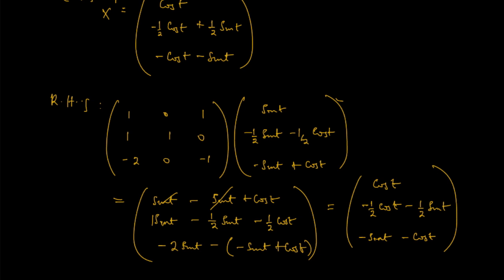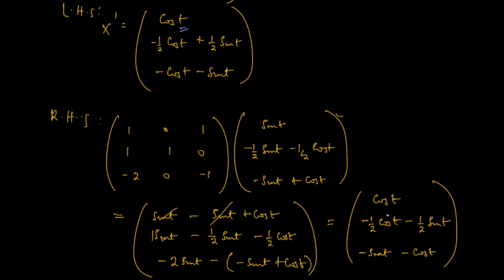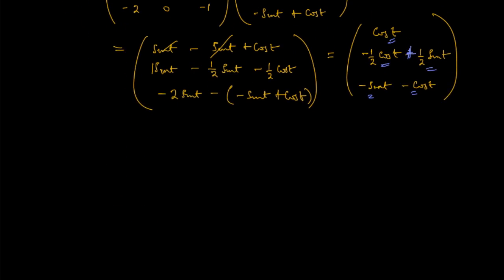Now let's compare. The left-hand side has cosine of t, and the right-hand side also gives cosine of t — they match. For the second entry, the left-hand side has negative half cosine of t plus half sine of t, and the right-hand side gives half sine of t minus half cosine of t — these match. Note there should be a positive sign for the half sine term; with that correction, the entries are equal. For the third entry, negative cosine minus sine equals negative cosine minus sine. We have shown that the left-hand side equals the right-hand side, so it is proved. That completes the problem.